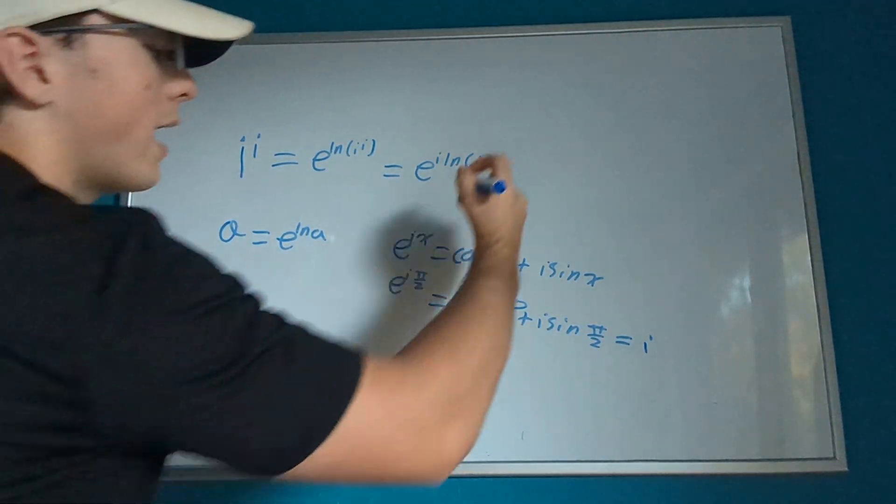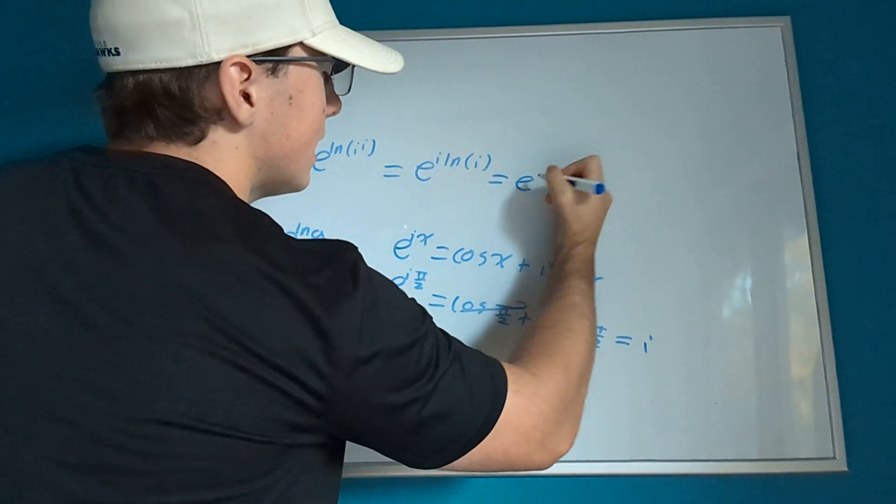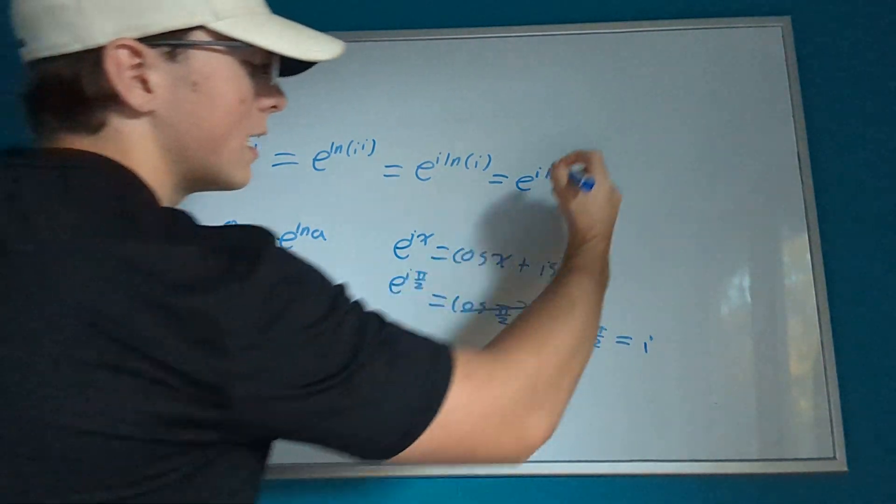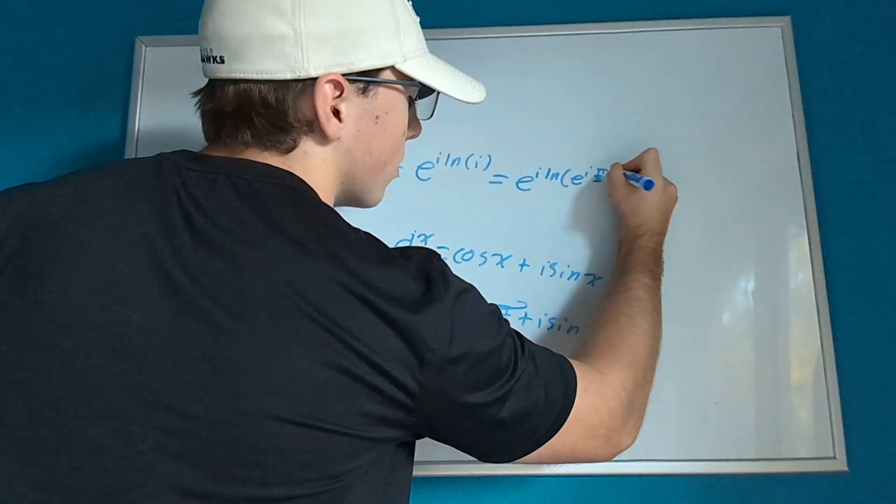So now we can plug that in for i. We're going to keep this i here. So we get e to the i times the natural log of e to the i times pi over 2.